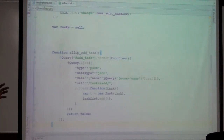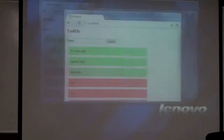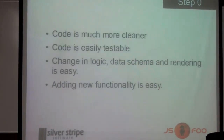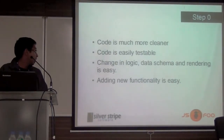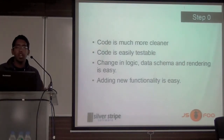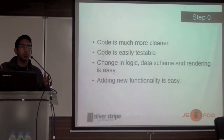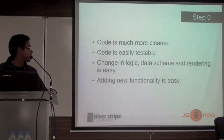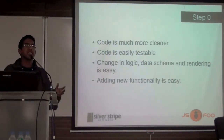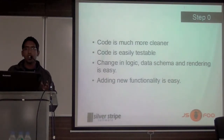This is not technically a completely orthogonal MVC example, but this is a place to get started. From that convoluted code, you've come to a slightly more organized piece of code. Code is much cleaner, which technically means it's also easily testable. Change in logic, data schema, and rendering is easy. If you're changing the way your task models are passed, or the way tasks are rendered on the page, or how you handle clicks versus checkboxes — all those things have been decoupled. Adding new functionality is easy. This is where you have to be in order to even start thinking about real-time.